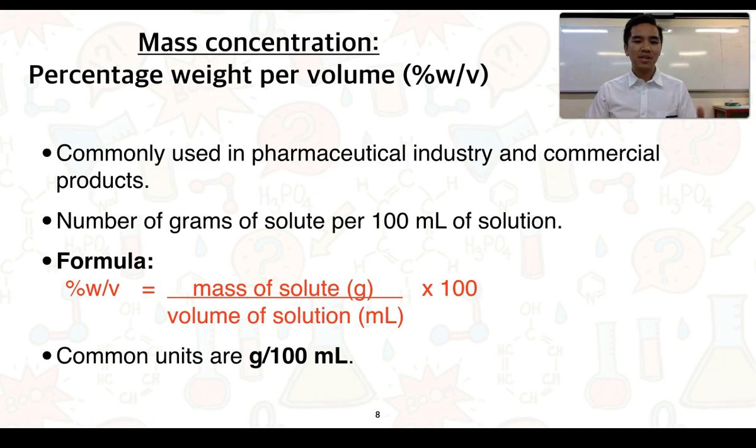Percentage weight per volume. We can often see it in the pharmaceutical industry as well as different commercial products. It by definition represents the number of grams of solute per 100 ml of solution. We've got a formula given here, so it's equal to the mass of a solute in grams divided by the volume of solution in mils, and then we multiply it by 100 to convert it into a percentage.